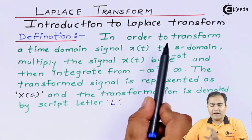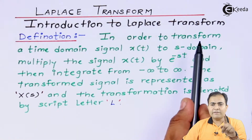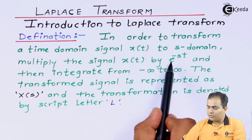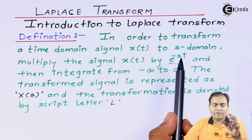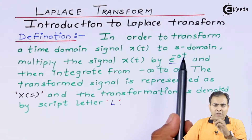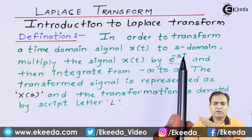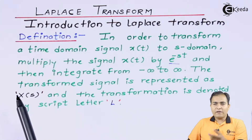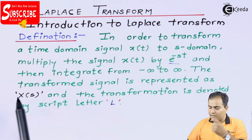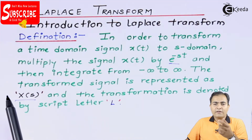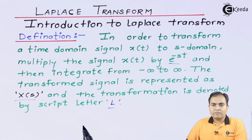In order to transform any type of time signal into the S-domain, first we multiply it with e to the power minus S·T. Then we integrate this product from minus infinity to infinity — that is from the leftmost range of time to the rightmost value of time. The outcome is called the Laplace Transform of X(T) and is represented by X(S), where the Laplace symbol is represented by a capital letter.